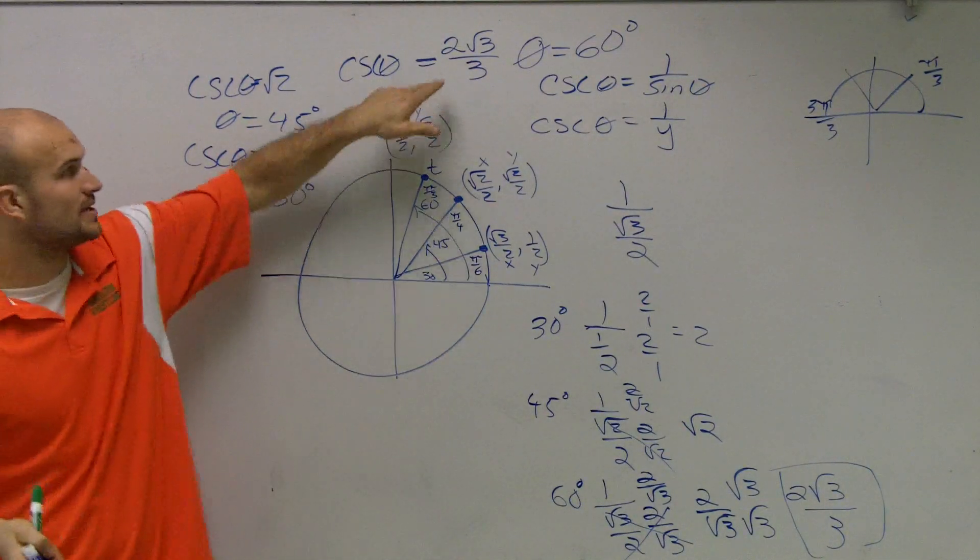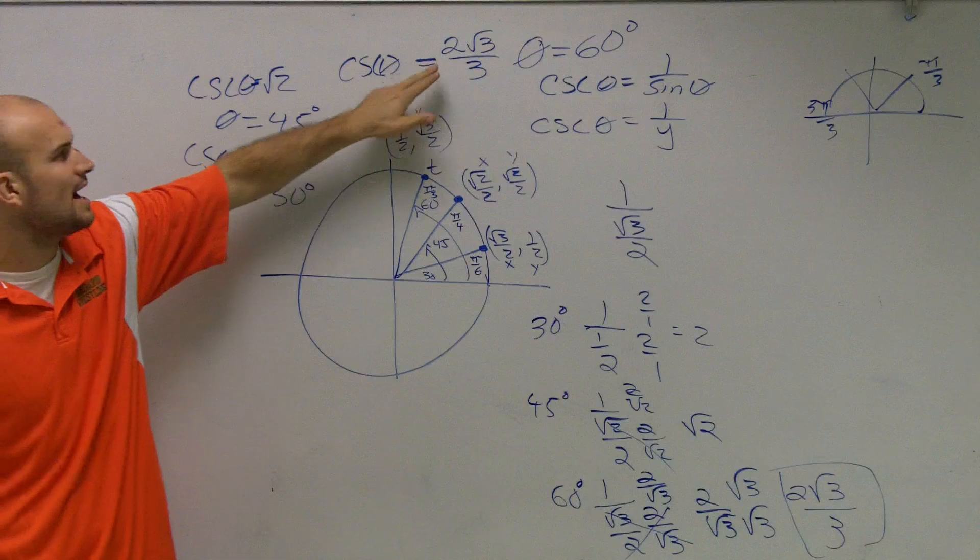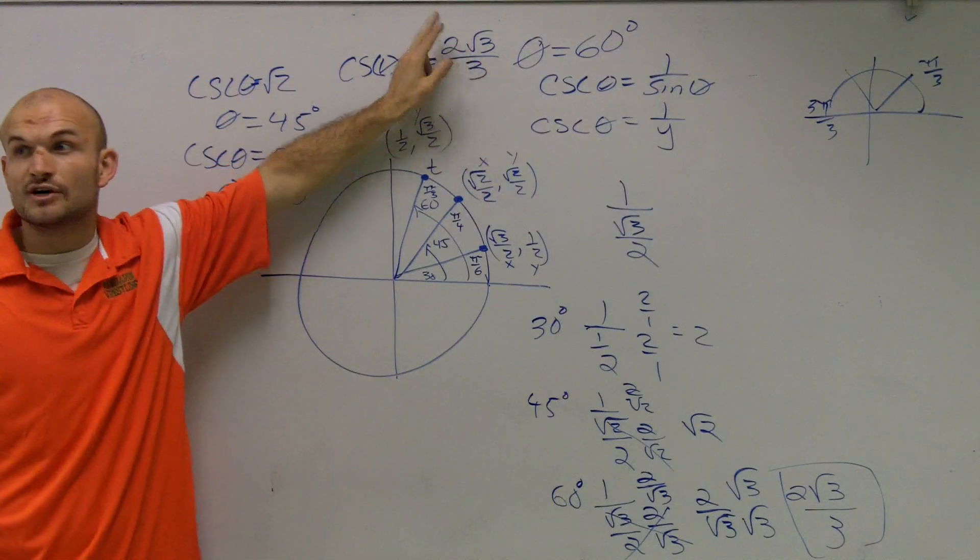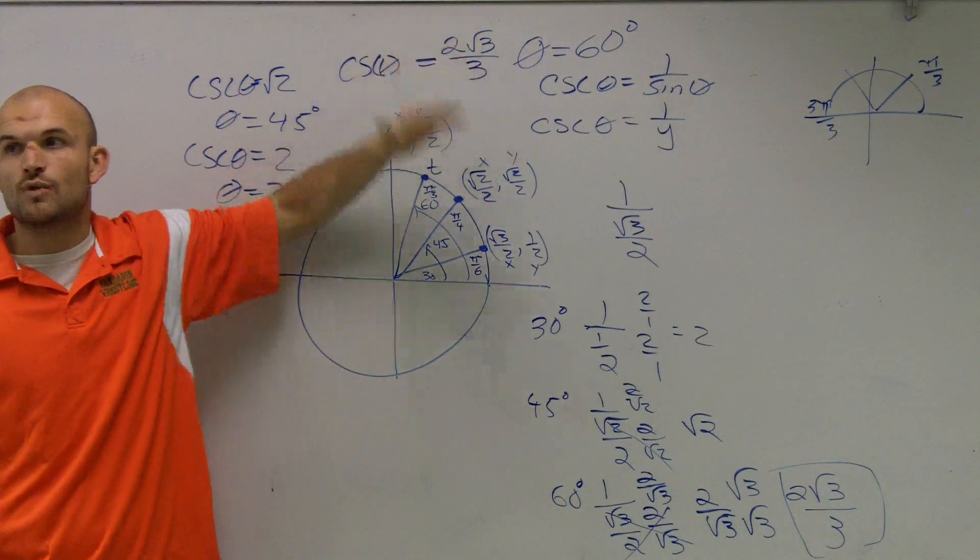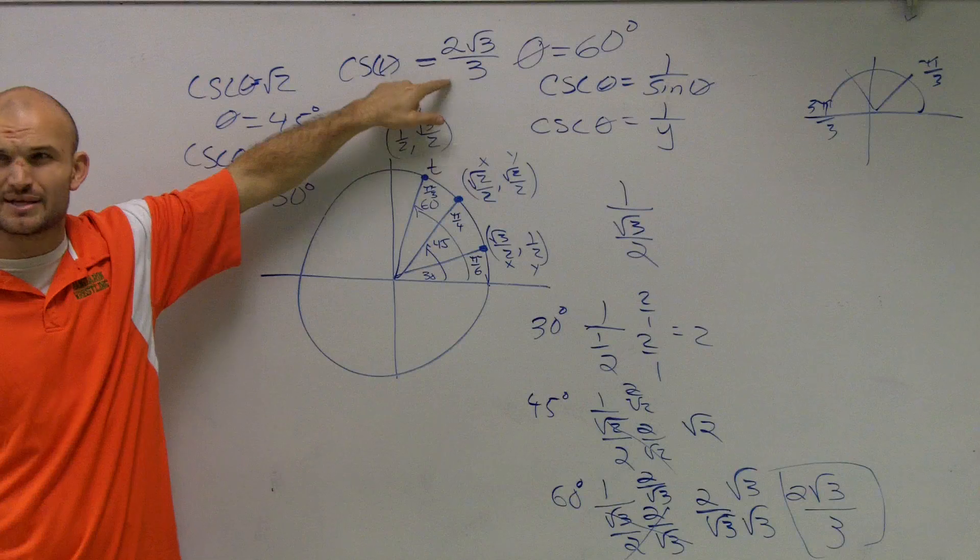So this is a little bit more difficult because you have to understand, well, how did I get to that point? So you have to understand it's 1 over which y coordinate gives you that. Does that make sense?